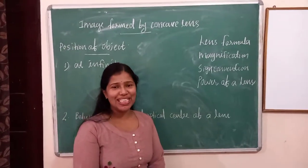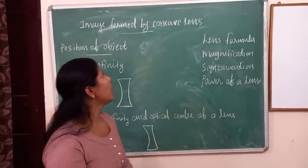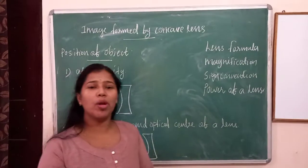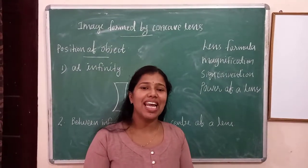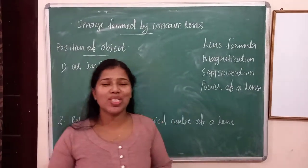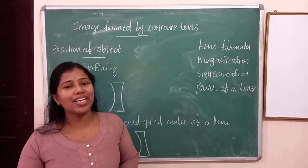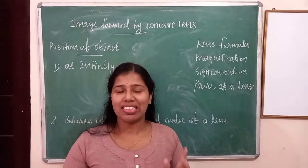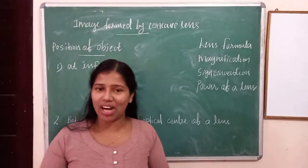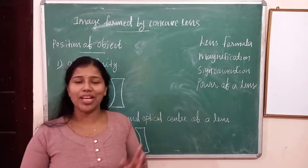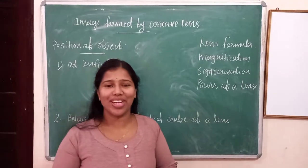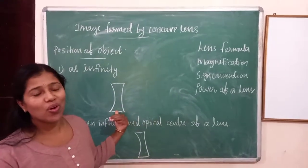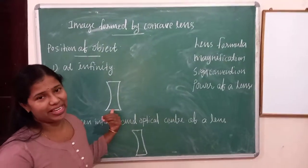Good morning my dear students. Today's topic is image formed by concave lens. Last class we discussed image formed by convex lens. We drew six diagrams and I explained the rules for convex and concave. This class I am explaining the case of concave lens.